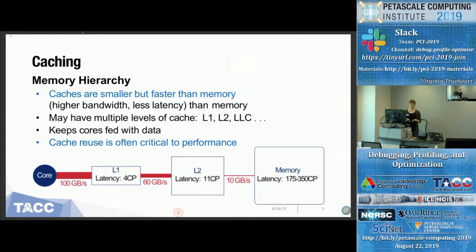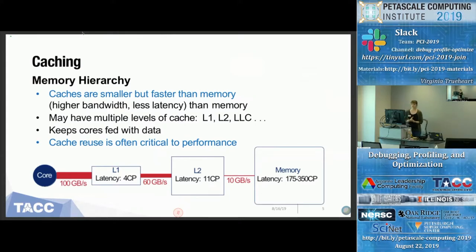Being able to reuse the cache is often critical for improving performance. Because the cache is so much faster, as long as you can keep that space occupied and continue pressing data through to the core, you'll see better performance. In this example, you can transfer 100 gigabytes per second from L1 cache to the core, only 60 gigabytes per second from L2, and only 10 gigabytes per second from main memory. So if you have a memory-heavy code that references a lot of input frequently, making use of the cache will help you a lot.